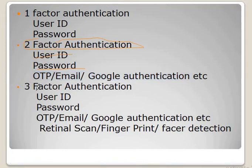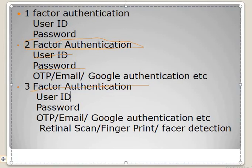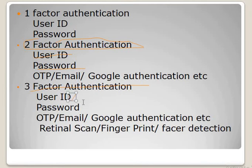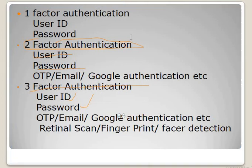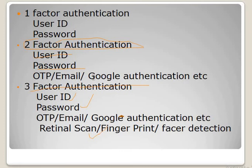The third factor of authentication works as follows: you enter your user ID and password, then wait for an OTP, email, or authentication code, and once you get that code, it will also ask you for a biometric proof — such as retina scan, fingerprint, or face detection. This three-factor authentication is also used by apps like Paytm for money transfer, and is used in phone security systems as well.